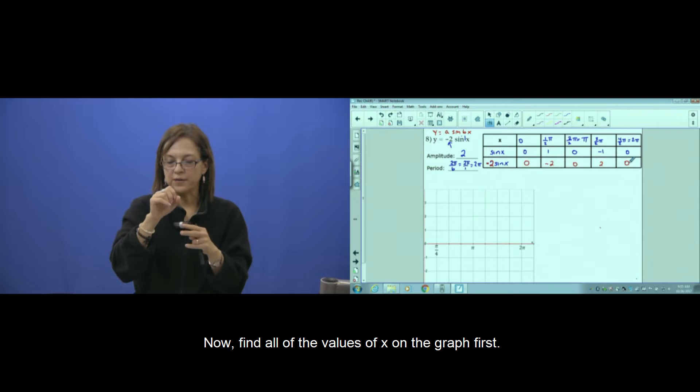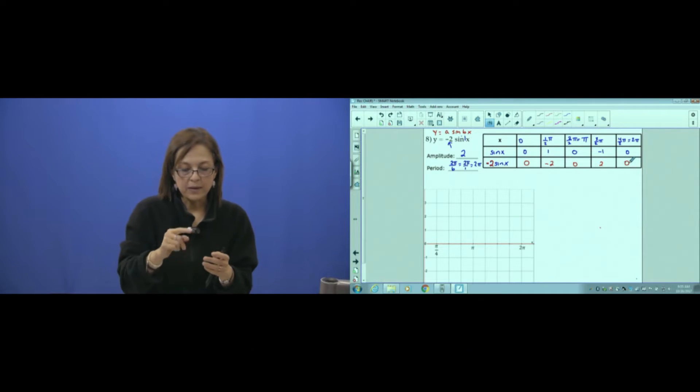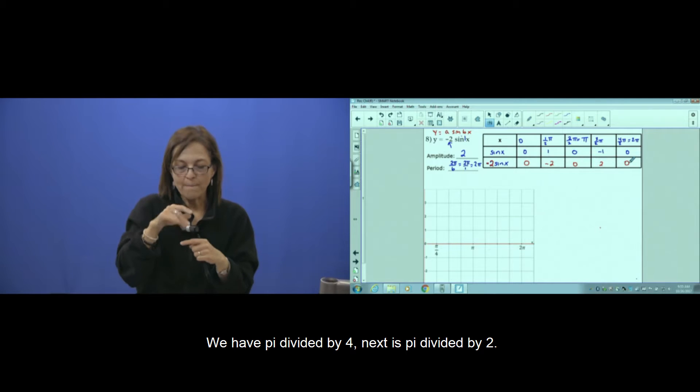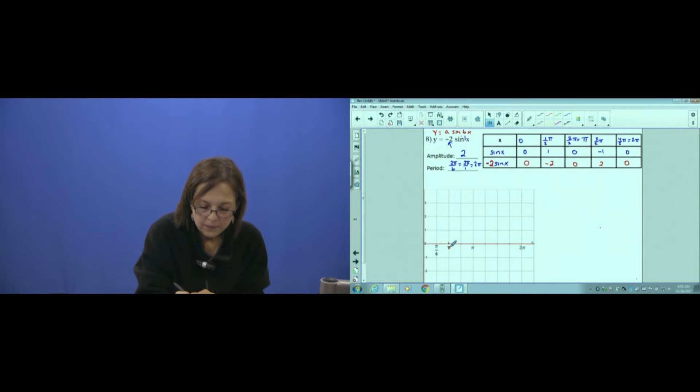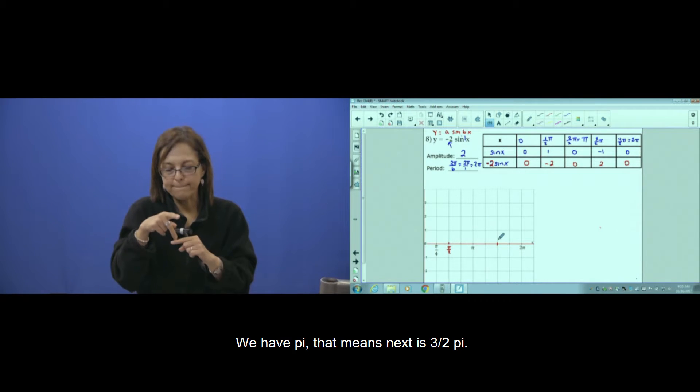Now find all the values of x on your graph first. We have π divided by 4, and then the next is π divided by 2. We have π, which means the next is 3 halves of π.